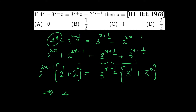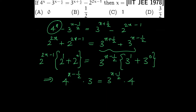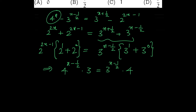4 raise to x minus 1 into 3 is equal to 3 raise to x minus half into 4. So x minus 3 by 2 is equal to 3 raise to x minus 3 by 2. Therefore x minus 3 by 2 equals 3 by 2, giving the answer x equals 3 by 2.